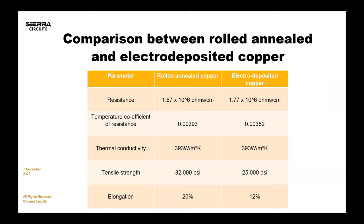If you take a look at this, you'll see that the elongation and tensile strength are better for rolled and annealed copper.